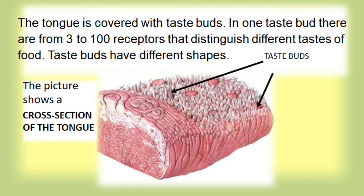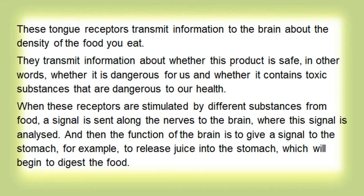The tongue is covered with taste buds. In one taste bud, there are from three to 100 receptors that distinguish different tastes of food. Taste buds have different shapes. The picture shows a cross-section of the tongue. These tongue receptors transmit information to the brain about the density of the food you eat. They transmit information about whether this product is safe — whether it is dangerous for us, and whether it contains toxic substances that are dangerous to our health. When these receptors are stimulated by different substances from food, a signal is sent along the nerves to the brain, where this signal is analysed.